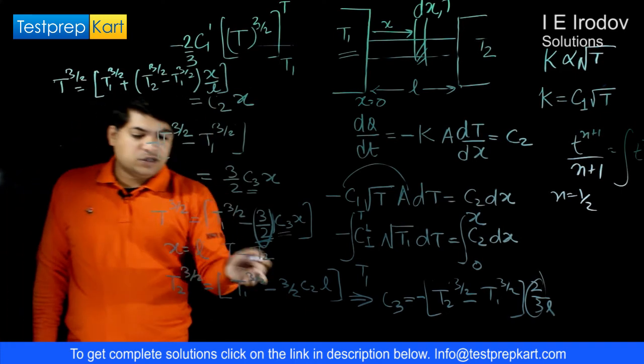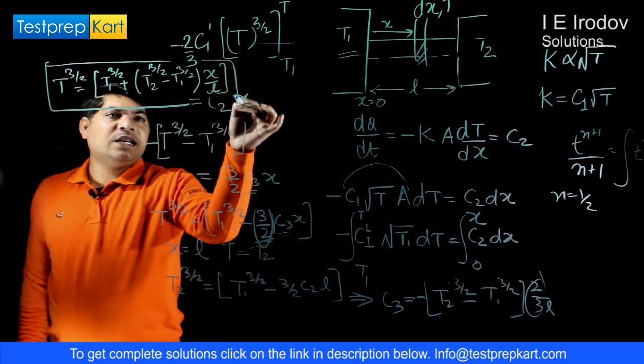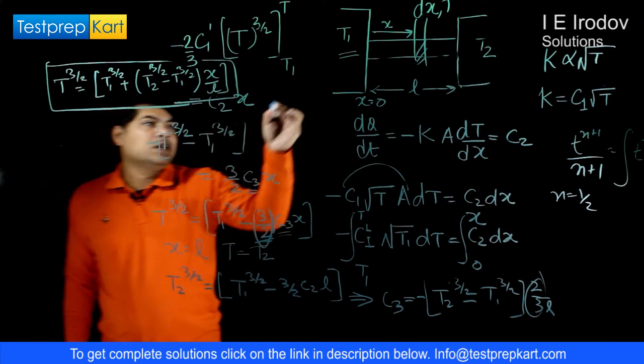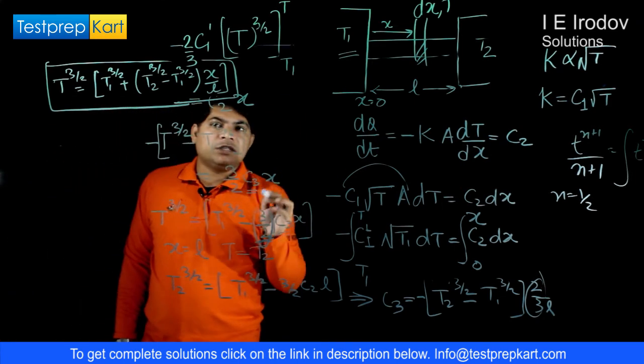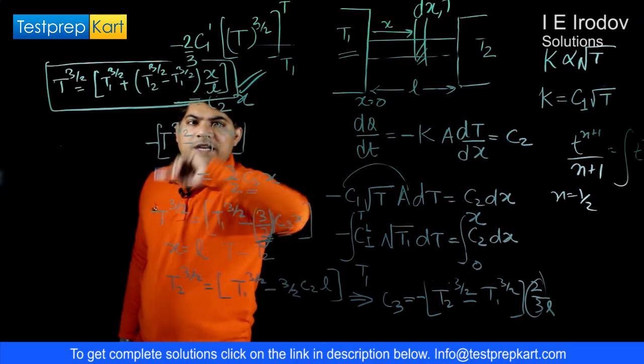It is our final expression that how temperature is changing from this temperature for this material which is placed between two temperatures T1 and T2. This is final release.